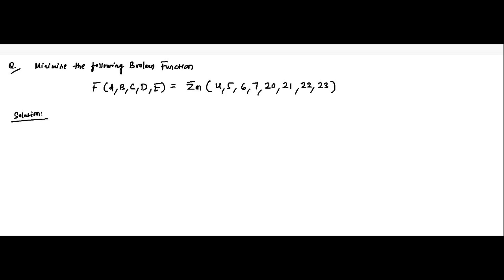Here is another question on 5-variable Boolean function simplification using a 5-variable KMAP. We have a function of 5 variables A, B, C, D, E given in terms of the min-term values 4, 5, 6, 7, 20, 21, 22, and 23.